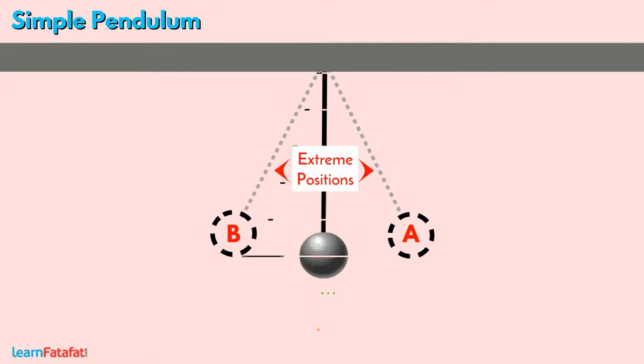There is a moderate position between the two extreme positions. It is called the mean position of the pendulum. Let's denote it by O. When the bob is at rest, it is at its mean position, i.e., O.